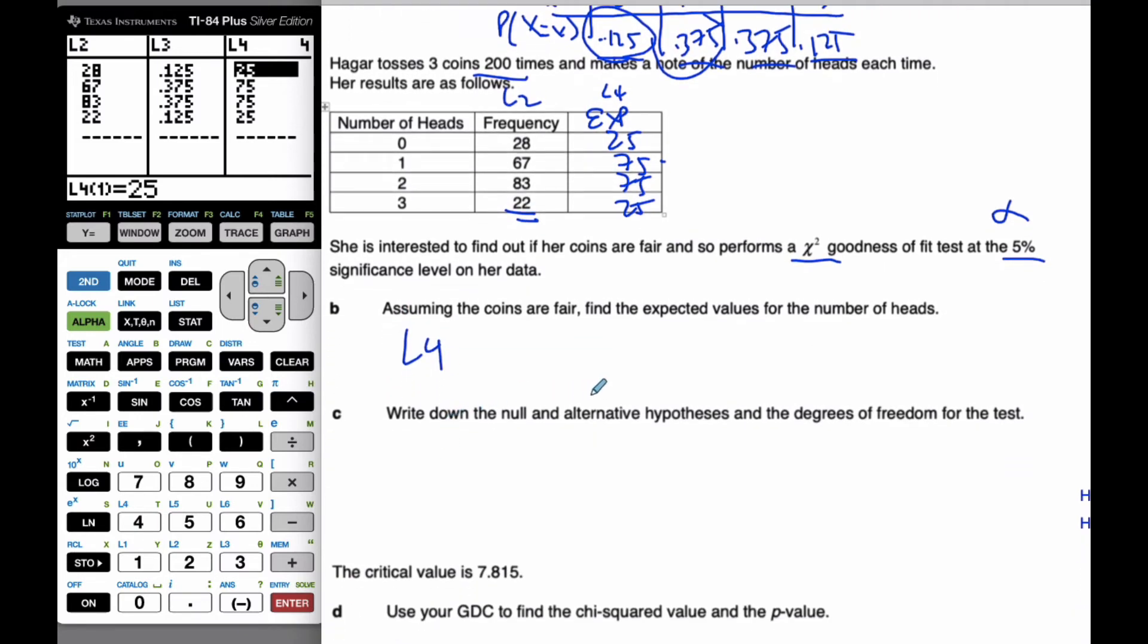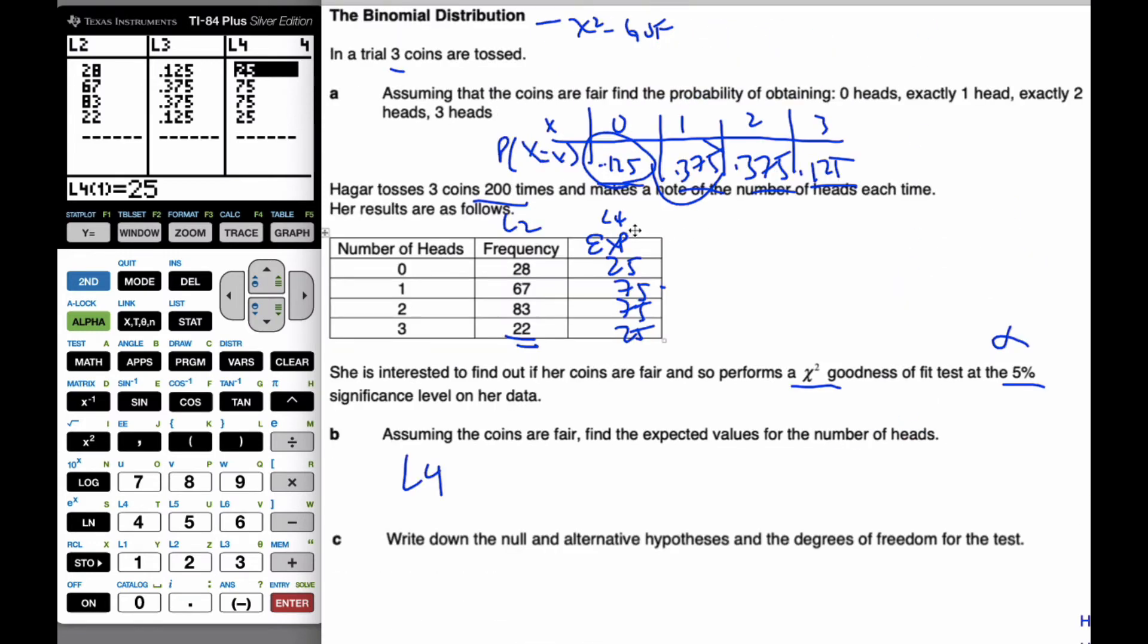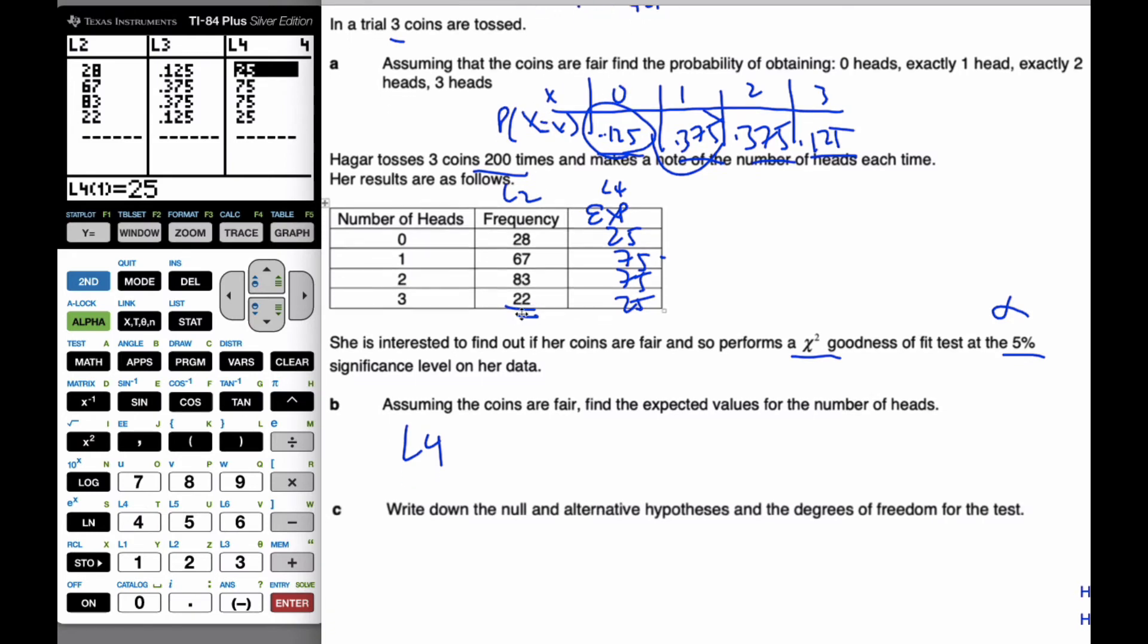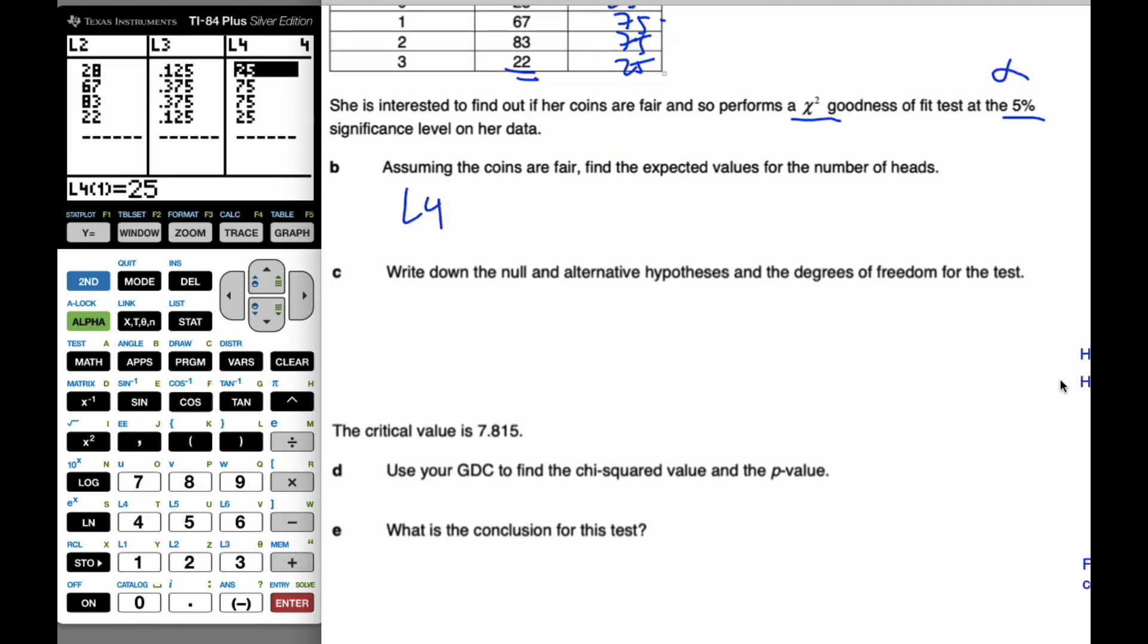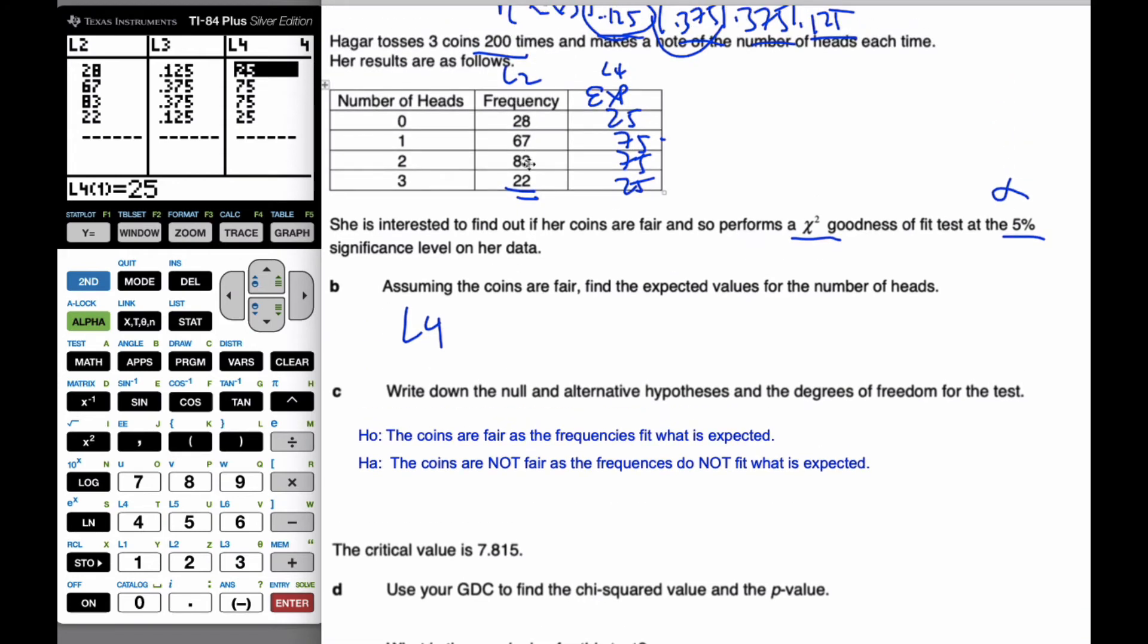Write down the null hypothesis and alternative hypothesis and the degrees of freedom of this test. Well, I know I'm asking to see, do these coins fit this expected probability or expected outcome? And so, my null hypothesis is always going to be the name of the test. Does it fit? Well, the coins are fair as the frequencies fit what is expected. So, this is implying the goodness of fit. So, they're fair because they do actually fit. The alternative is that they're not fair because they do not fit what is expected.